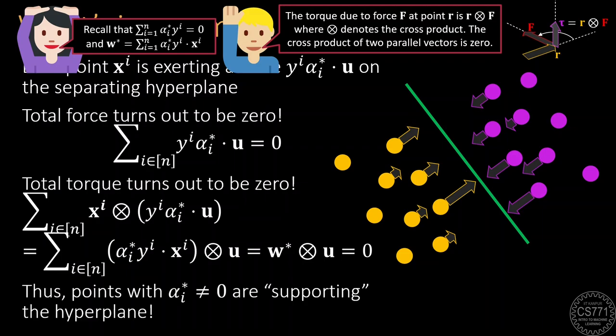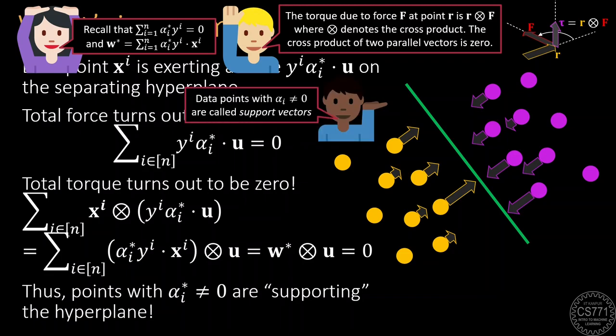So, in this sense, the data points with alpha*_i not equal to zero can be said to be supporting the hyperplane as they neither let the hyperplane shift nor rotate. Unsurprisingly, these data points are called support vectors.